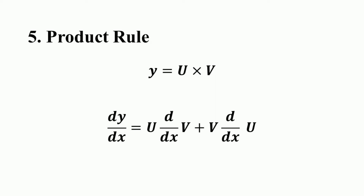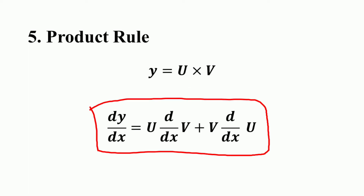In other words, the derivative of a product of two functions u and v equals the first function multiplied by the derivative of the second function, plus the second function multiplied by the derivative of the first function.